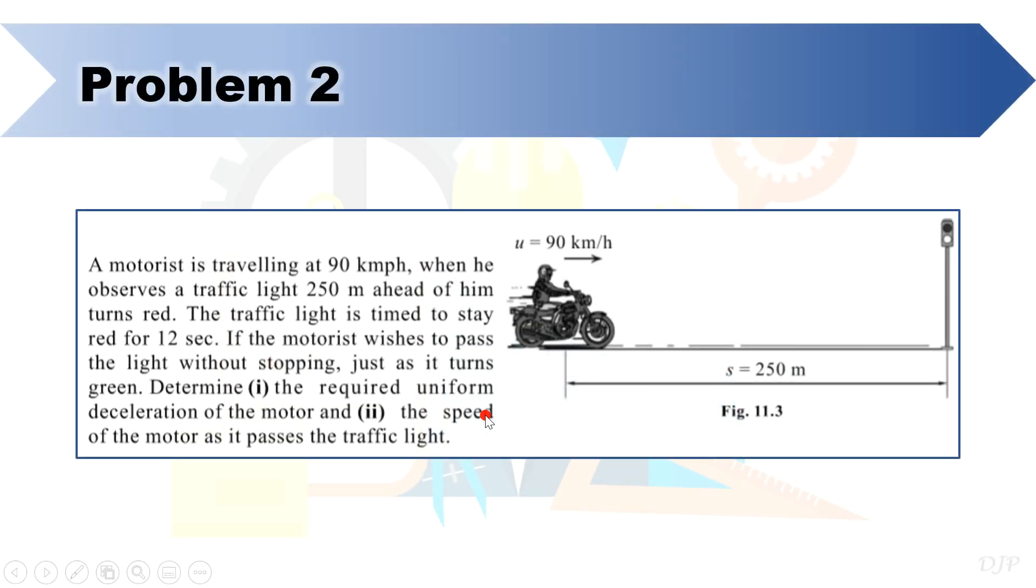For our second problem, we have here a motorist is traveling at 90 kph when he observes a traffic light 250 meters ahead of him turns red. The traffic light is timed to stay red for 12 seconds. If the motorist wishes to pass the light without stopping, then we need to answer these two questions.